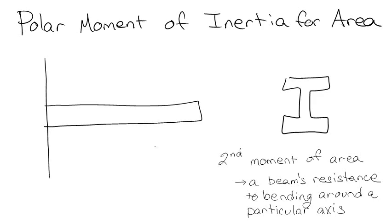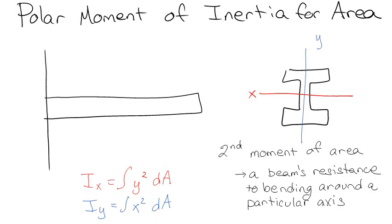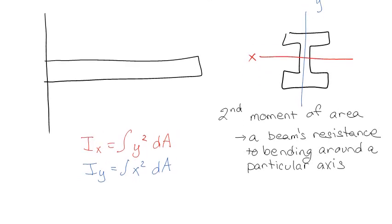Basically what we're going to do is previously we would look at something like this, and that would be like the x-axis running through here. And we would say, okay, well, Ix is going to be equal to the integral of y squared dA, and that would be a measurement of how easily it's going to bend around the x-axis. Or we would say, here's the y-axis, and so we could say that Iy was equal to x squared dA, and that would be its resistance to bending around the y-axis.